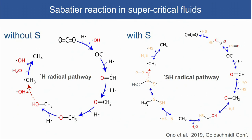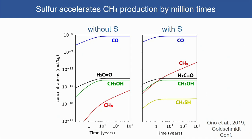What is very interesting is that if you add sulfur, the key ingredient is the hydrogen sulfide radical, which also produces thioaldehyde species. The rate-limiting step again is the formation of methyl radical. So now we have a possible reaction mechanism applicable to this geothermal environment.